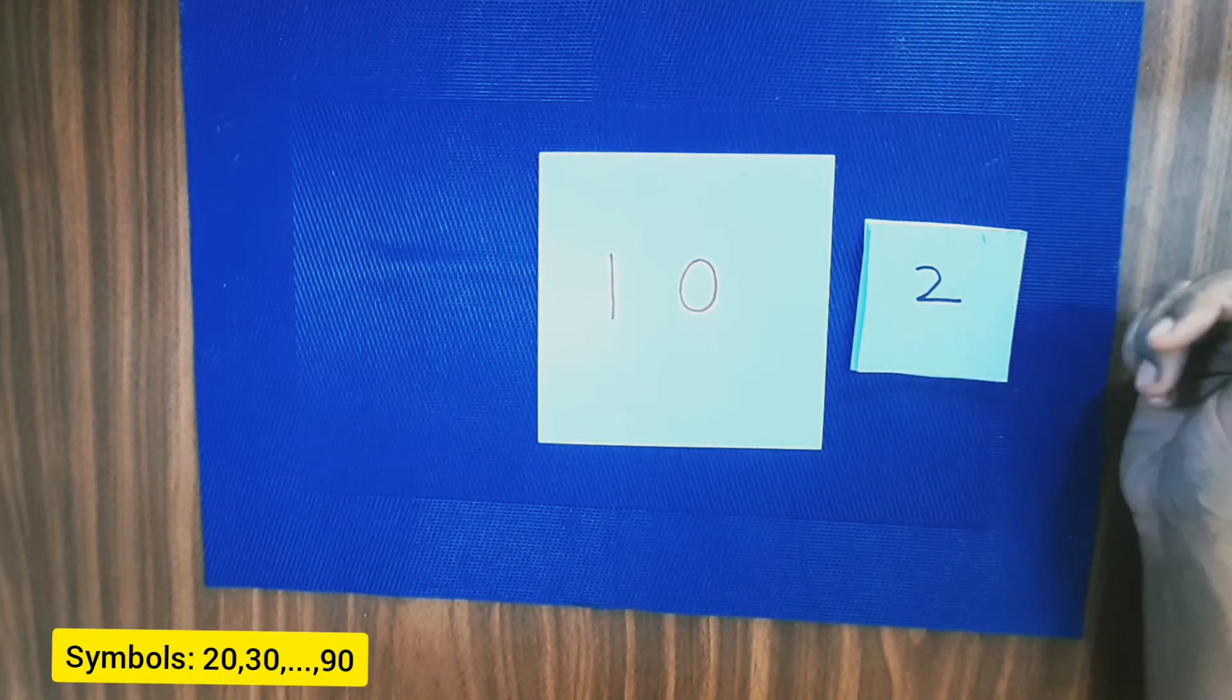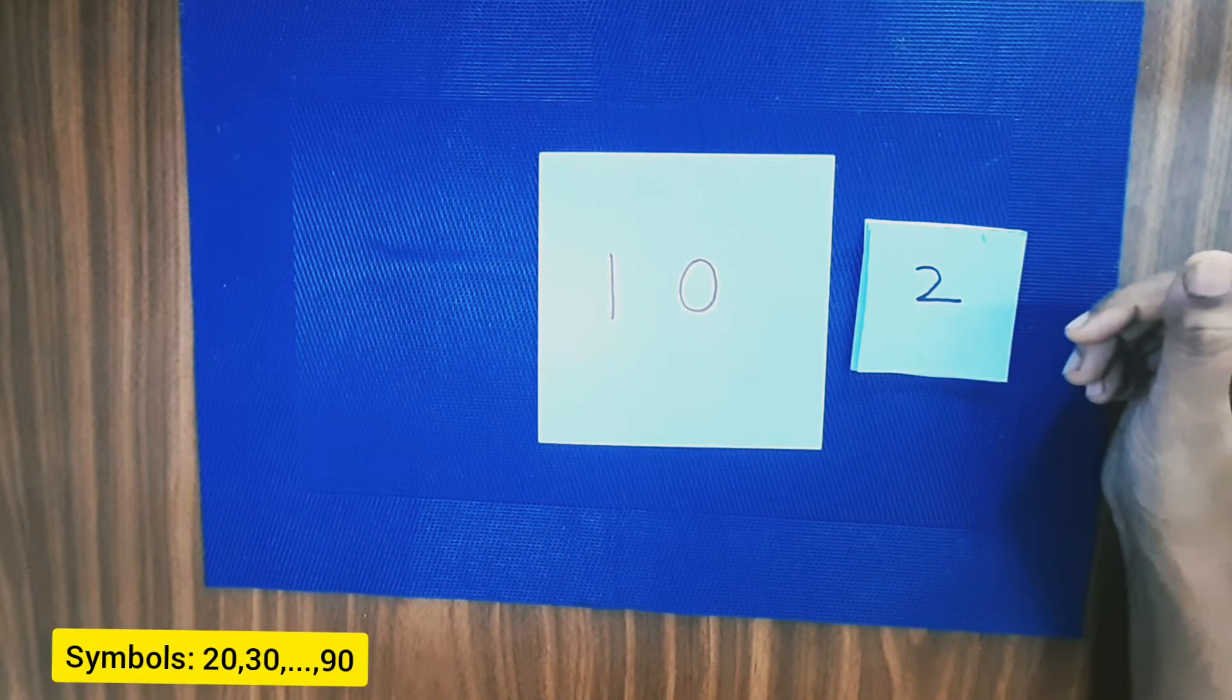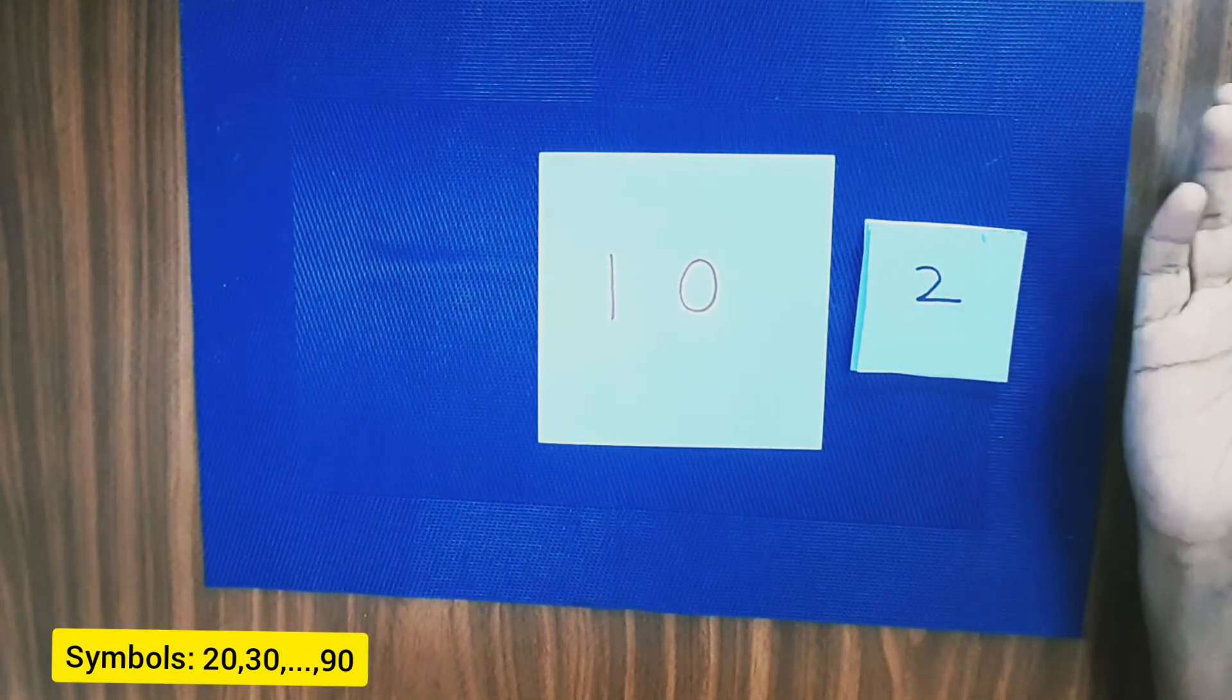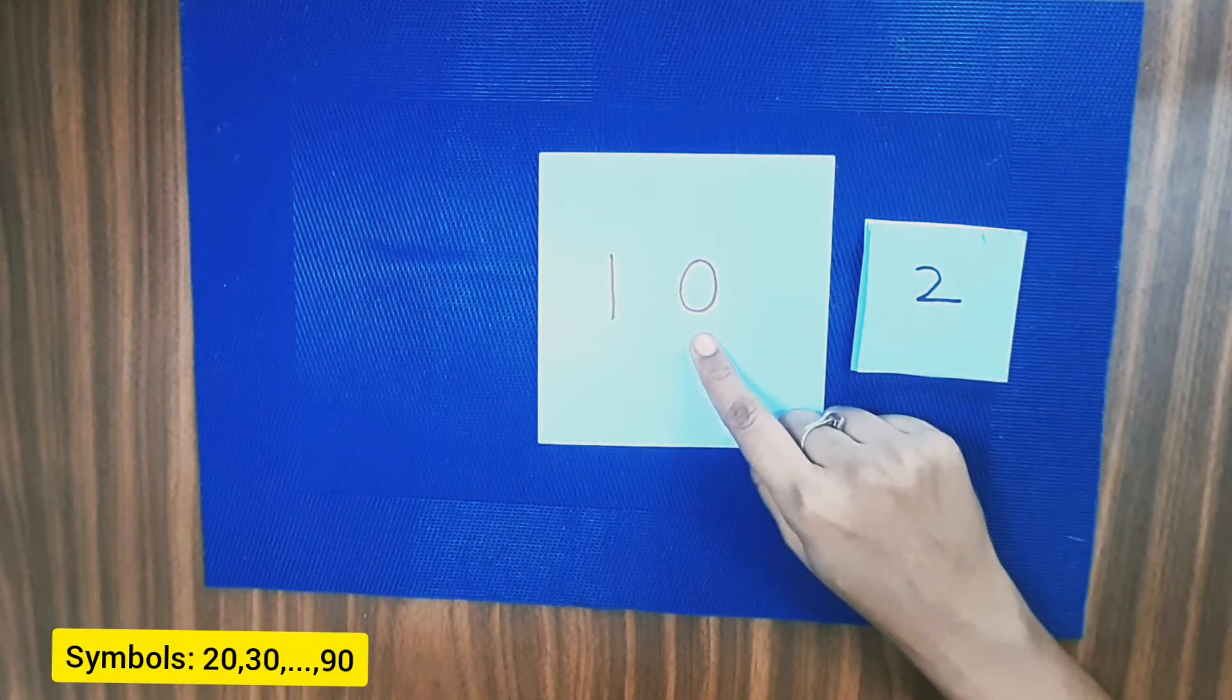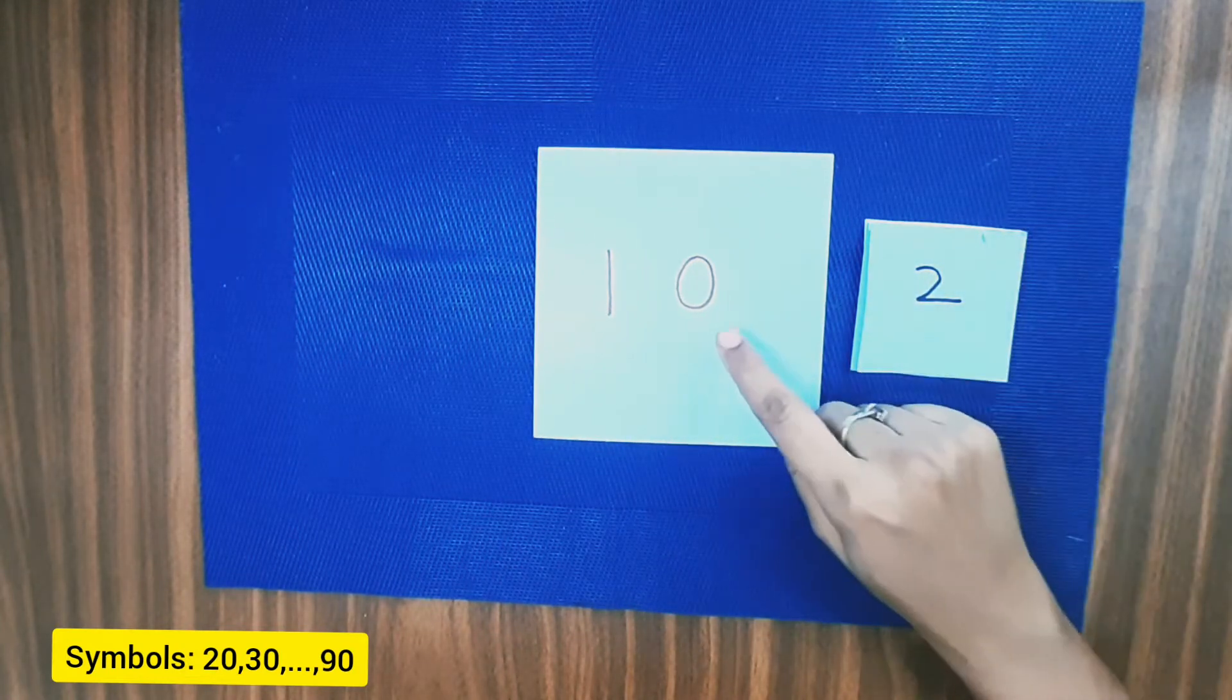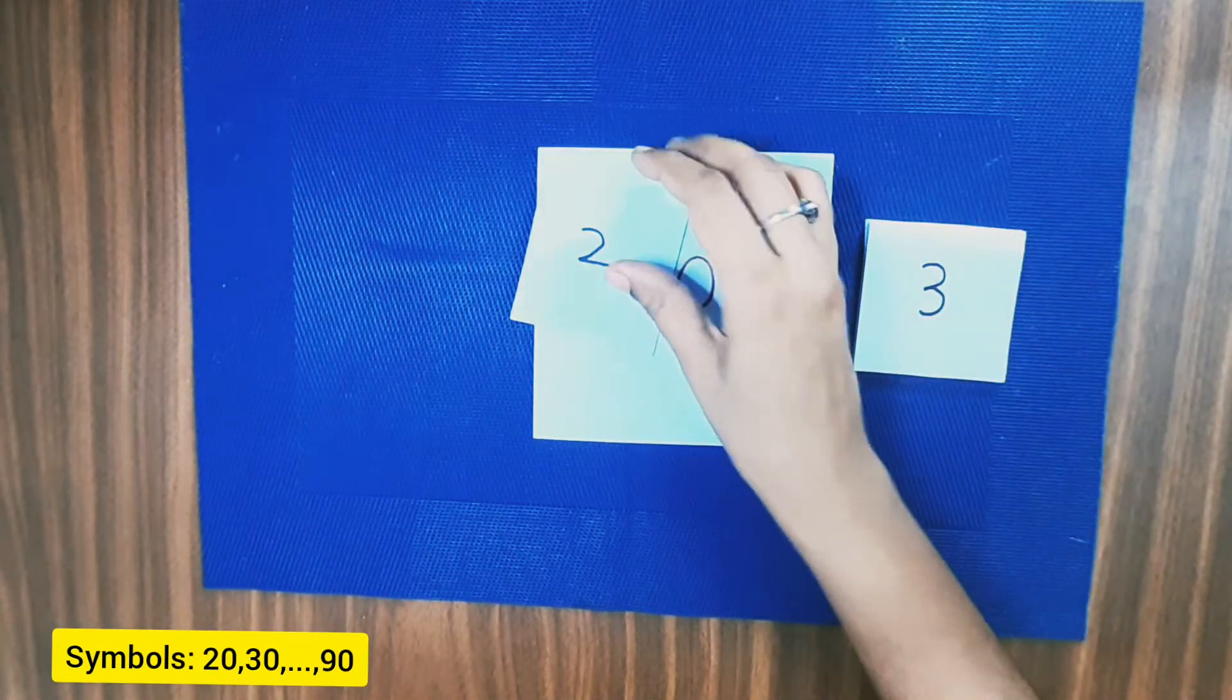So first we invite the child by an invitation saying, shall I show you symbols for few numbers? Make sure the child is sitting on your left. Now ask the child to watch carefully. Ask the child what is this?